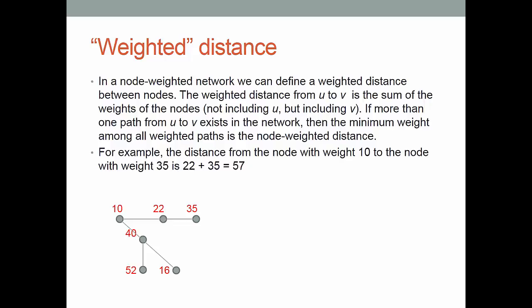However, what we would like to do is say the distance from node U to node V is the sum of the weights along the shortest path including the terminal node. So the distance from the node weighted 10 to the node weighted 35 would be 22 plus 35 or a total distance sum of 57.